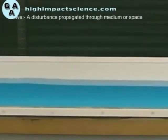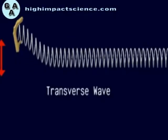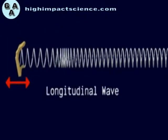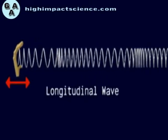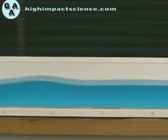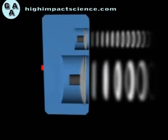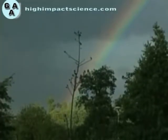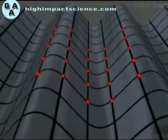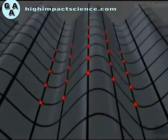In Form 1, we defined a wave as a disturbance propagated through a medium or space. Waves can be transverse or longitudinal, depending on the displacement of particles with respect to the direction of propagation. In this chapter, we shall look at water waves, light waves, and sound waves. Water waves and light waves are transverse, but sound waves are longitudinal. Important to remember is that waves only transfer energy, not matter.